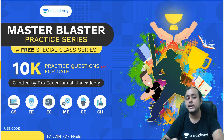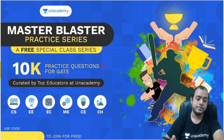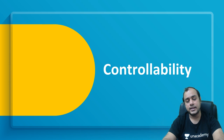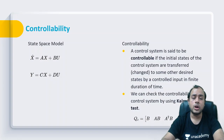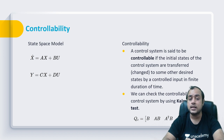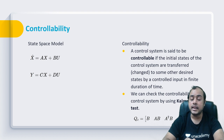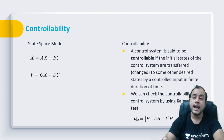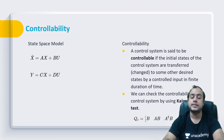Now let's discuss controllability. Controllability of a system defines that we can control the state in which that system lies in a given interval of time using the inputs. That is, if I vary the inputs, can I change the system state as per my desire within a given period of time?